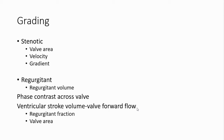For grading of regurgitant lesions, regurgitant volume is needed. This can be obtained by phase contrast across the valve directly, or indirectly by subtracting the forward flow across the regurgitant valve from the ventricular stroke volume. Regurgitant fraction is the ratio of regurgitant volume to the stroke volume of the regurgitant valve. The valve area of the regurgitant valve can also help in prognosis of patients.